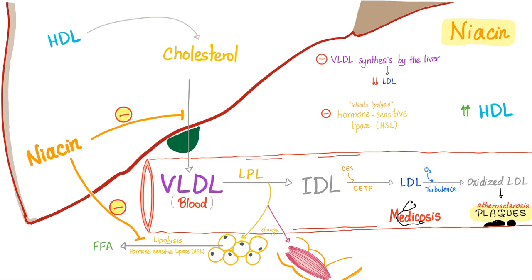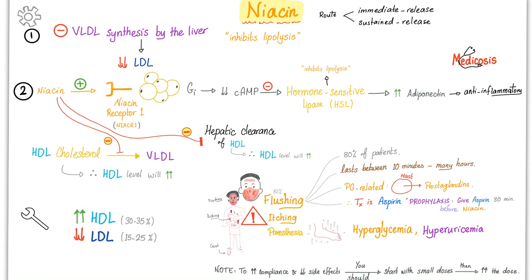Niacin inhibits the formation of VLDL. Therefore, there will be less IDL and less LDL. When you block this pathway, everything upstream goes up, including high-density lipoprotein — your good cholesterol. Side effects of niacin include flushing, itching, paresthesia, hyperglycemia, and hyperuricemia. To prevent flushing, give aspirin about 30 minutes before niacin, because niacin flushing is prostaglandin-related and aspirin inhibits prostaglandin formation.